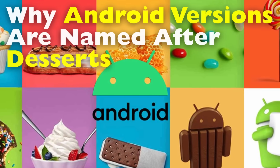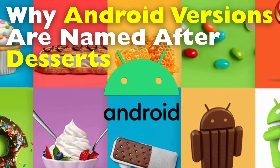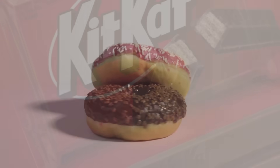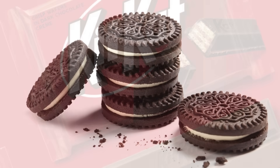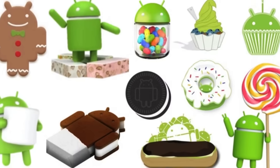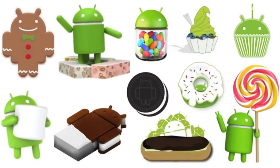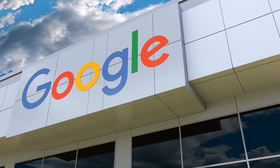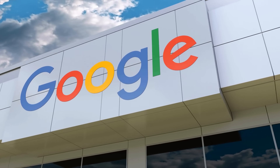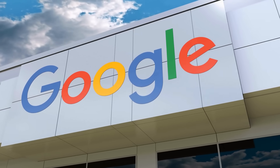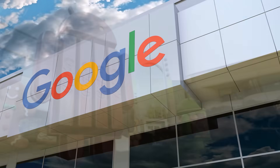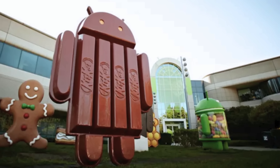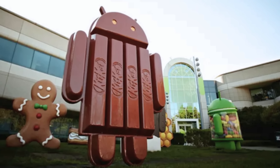Have you ever wondered why Android versions have such sweet names? From Cupcake to Donut, KitKat to Oreo, it seems like every version of Android used to come with a craving for dessert. But why did Google, the tech giant behind the world's most popular mobile operating system, decide to name its software after sugary treats?